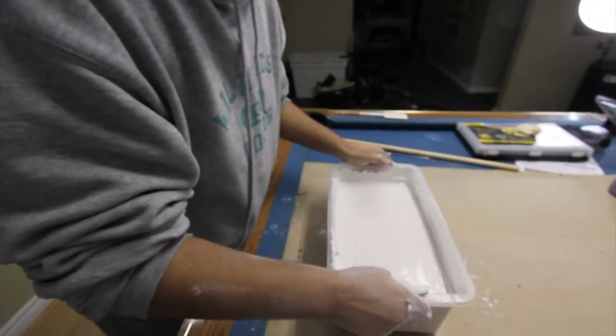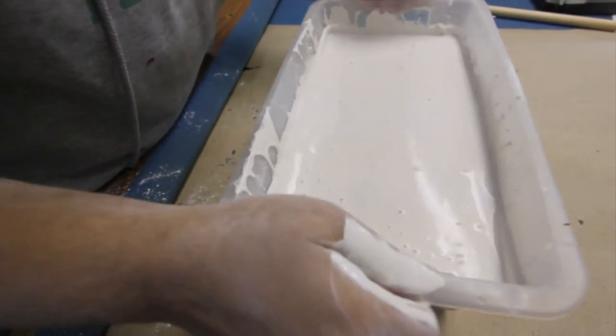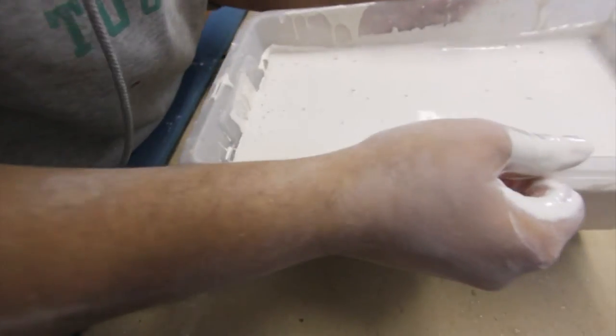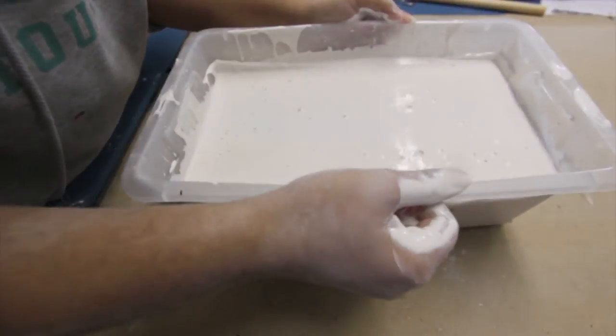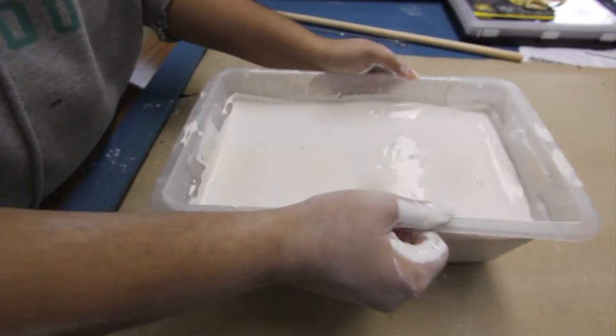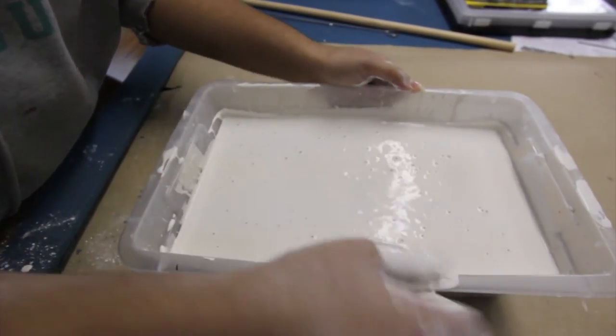Again, we have about three minutes. You want to get the air bubbles out. You can do that by tapping it up and down on the table. You'll see all the air bubbles starting to pop at the top. This will help eliminate them from appearing in your final cast.